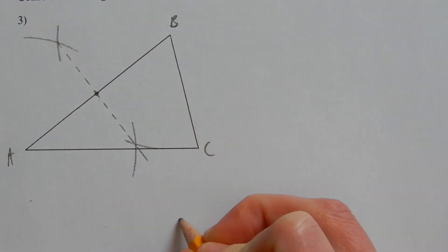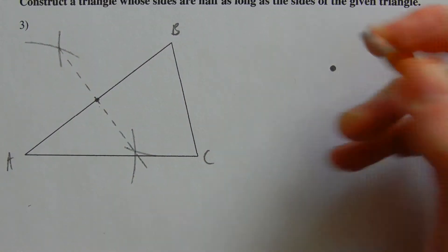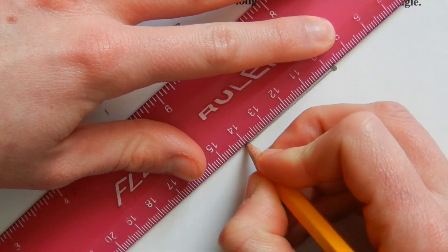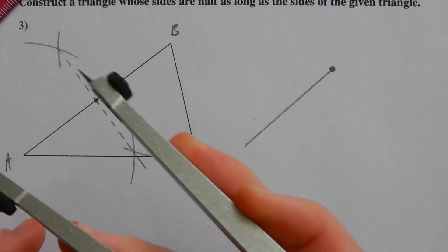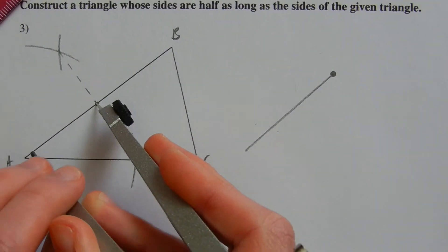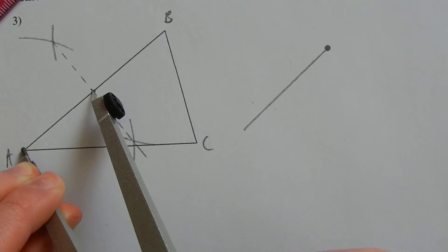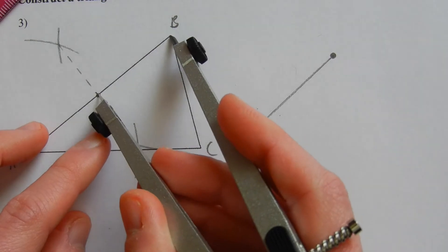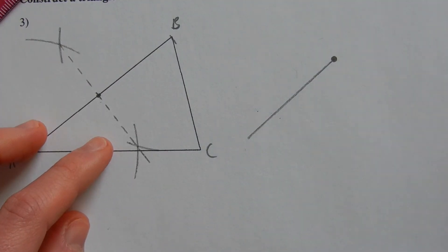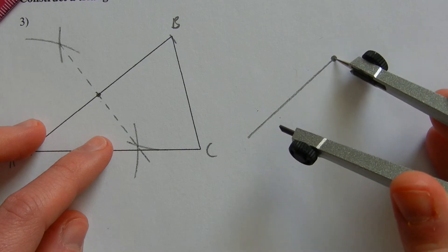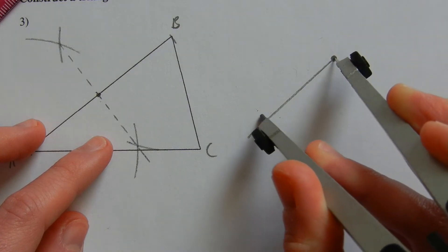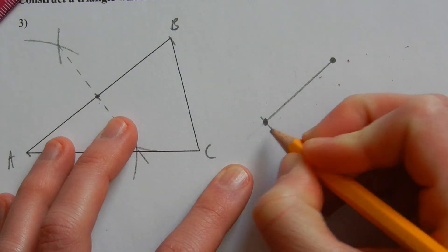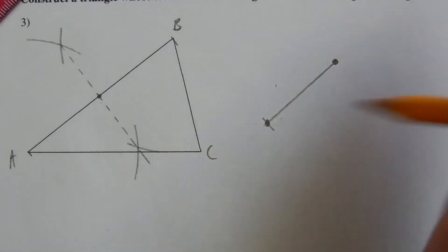We can see our intersection occurs at that midpoint. Drawing a point there, we start our new segment. We want the distance that's half as long, so from the midpoint to A we take that measurement on our compass — or from the midpoint to B since they're equal. Starting at the endpoint placed on our new segment, we transfer that measurement, and where that intersection occurs will be the second point of our triangle.